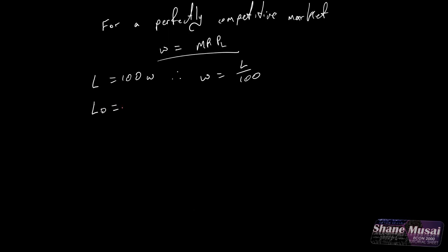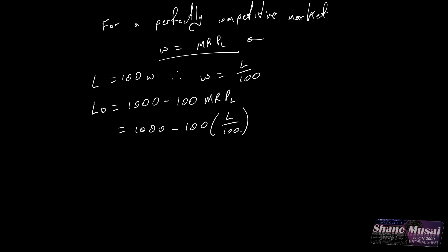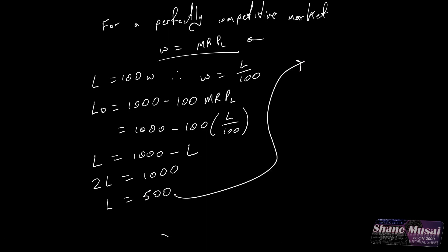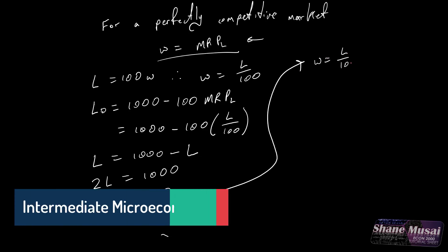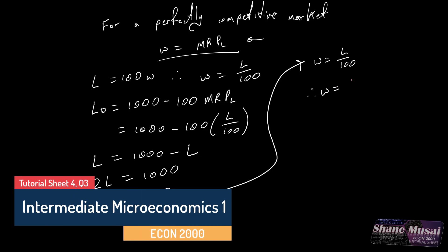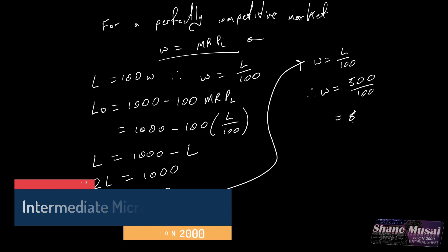From the demand curve, the labor demanded equals 1000 minus 100 times the MRPL. Substituting wage as MRPL, this equals 1000 minus 100 times L over 100, so L equals 1000 minus L. Therefore 2L equals 1000, and L equals 500. With this value of labor, the wage equals L over 100, therefore the wage is 500 divided by 100, which equals $5.